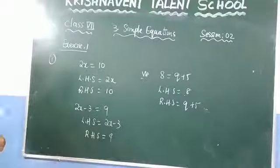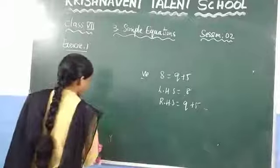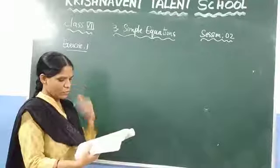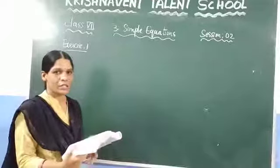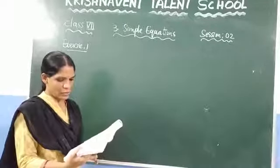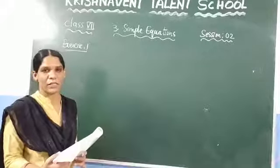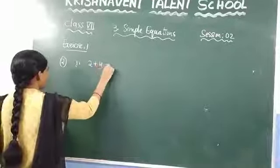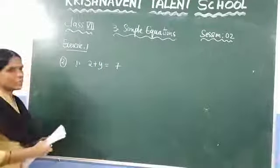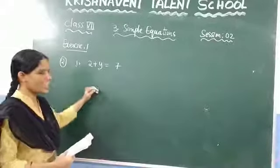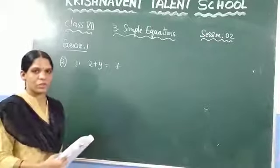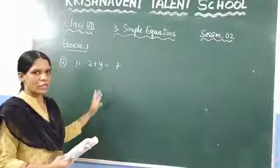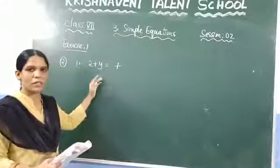Now see the second question. They have given some equations and you need to solve them by finding the value of the variable. The first question is: 2 plus y is equal to 7. You need to solve this linear equation using the trial and error method. The variable here is y, so by putting different values of y you check when you get the result equal to 7.